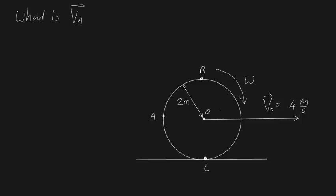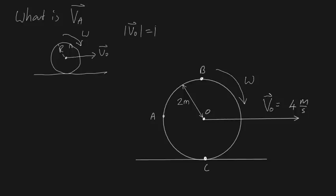Now let's also cover a formula I derived in a previous video. If we've got a wheel rolling across this floor with velocity V₀, and the wheel has radius R, then its angular velocity must be equal to V₀ divided by R. In other words, V₀ must equal R times omega. I won't prove it in this video, but it's a very useful formula.